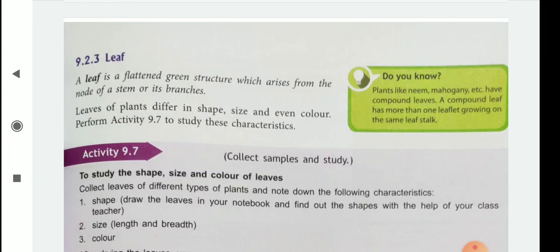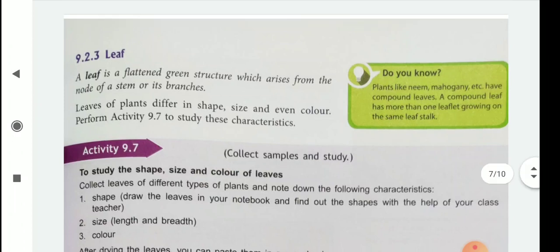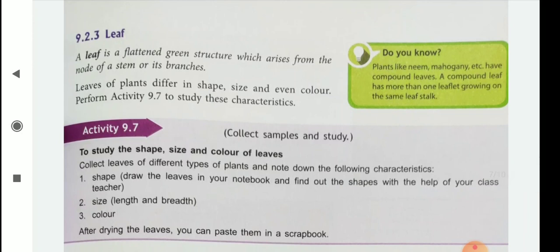Now we will discuss about the leaf. A leaf is a flattened green structure which arises from the node of a stem or its branches. Leaves of plants differ in shape, size, and even color. Some plants have big leaves and some plants have narrow leaves, and some plants have red, yellow, or green colored leaves.